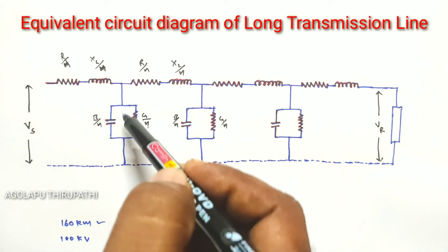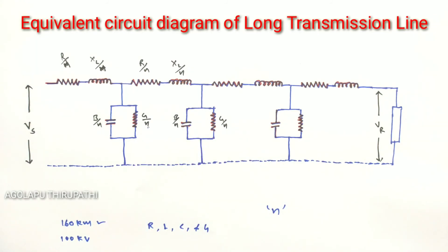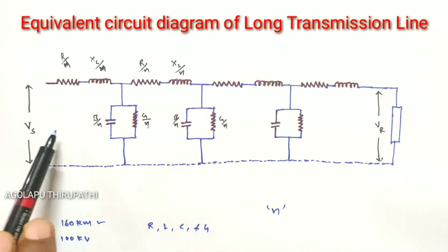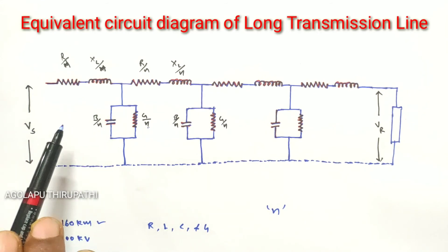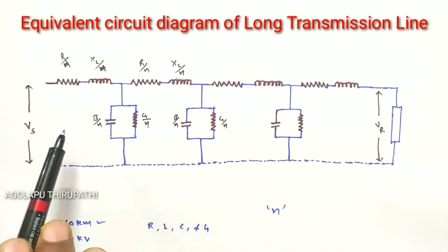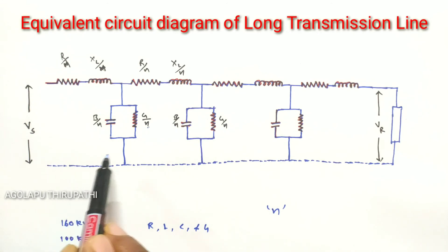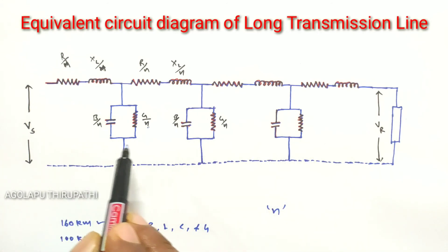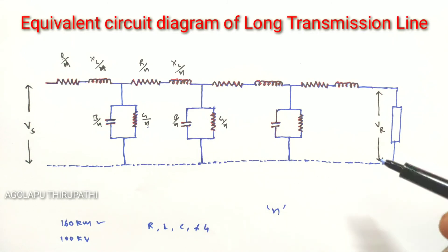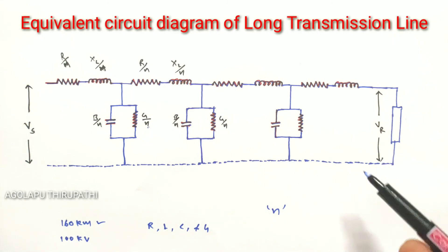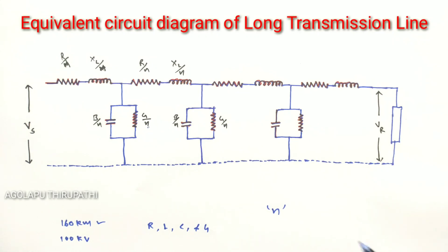One important point: the leakage current through the shunt admittance is maximum at the sending end of the line, and it decreases continuously as we move towards the receiving end, where it becomes zero. In the next video lecture, I will explain the analysis of long transmission lines using the rigorous method. Thank you.